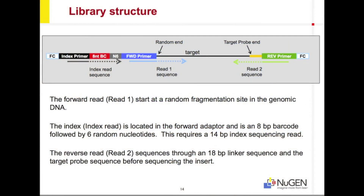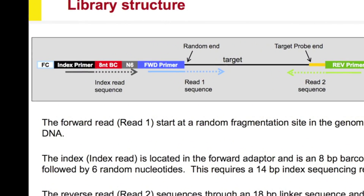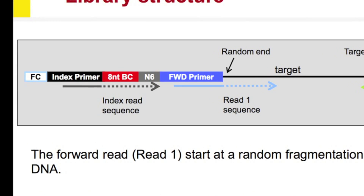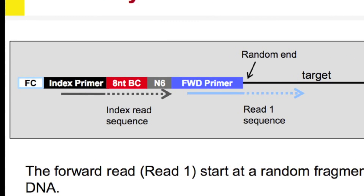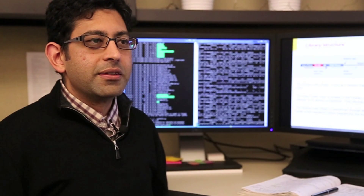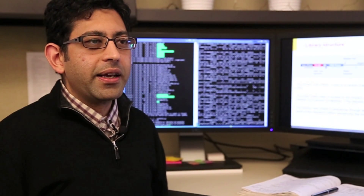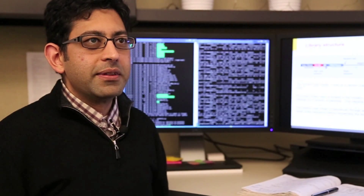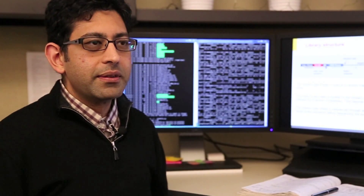There are, however, a few differences. First, we've relocated the barcode, or the index, to the forward adapter. Adjacent to the barcode are six random nucleotides, which are used for PCR duplicate identification. For variant analysis of genomic DNA, we recommend a single-end read with a 14 base pair index read.